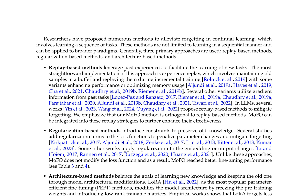Regularization-based methods introduce constraints to preserve old knowledge by adding regularization terms to the loss function to penalize parameter changes and mitigate forgetting. Unlike these approaches, MOFO does not modify the loss function and as a result achieves better fine-tuning performance. Architecture-based methods balance learning new knowledge and retaining old knowledge through model architectural modifications. LoRA, as the most popular parameter-efficient fine-tuning method, modifies the model architecture by freezing pre-training weights and introducing low-rank trainable matrices. Empirical work shows that LoRA forgets less but also learns less during fine-tuning. In comparison, MOFO still allows for high-rank updates to achieve better fine-tuning performance.